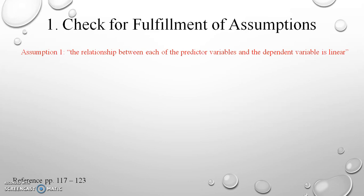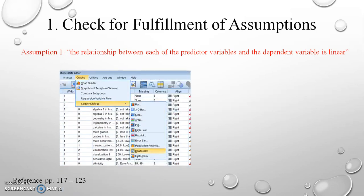Before generating results we need to check the assumptions of multiple regression, beginning with the first assumption that each predictor variable and the dependent variable is linear. To do this, we go to our HSB data file in SPSS, and in the menu bar we select Graphs, Legacy Dialogs, then Scatter Dot.